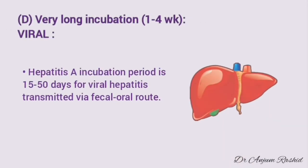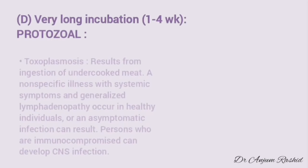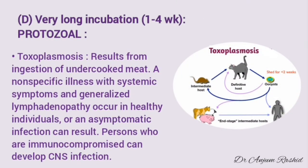Viral causes in this group include Hepatitis A virus, with an incubation period of 15 to 50 days, causing viral hepatitis transmitted by the feco-oral route. A protozoal illness with very long incubation period is toxoplasmosis, which results from ingestion of undercooked meat. It is a non-specific illness with systemic symptoms and generalized lymphadenopathy in healthy individuals, or there may be asymptomatic infection. Immunocompromised persons can develop severe CNS infection.